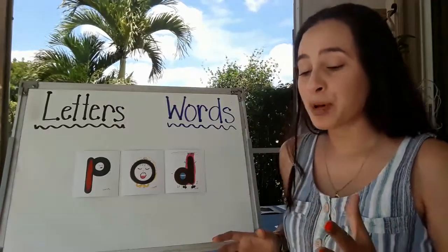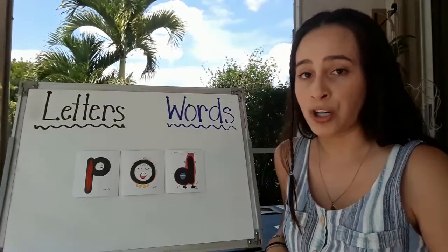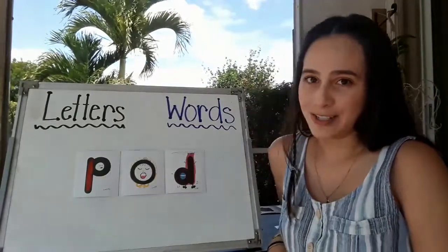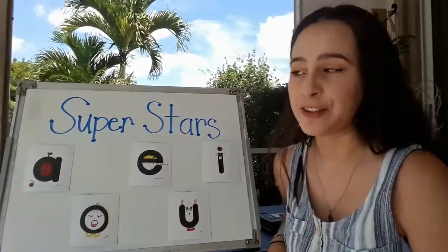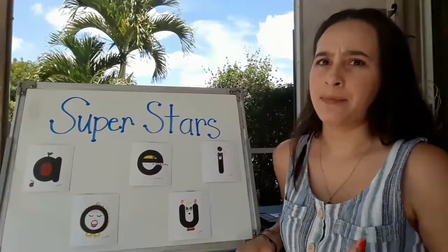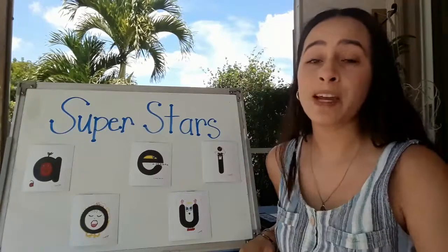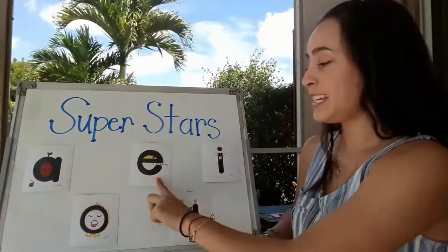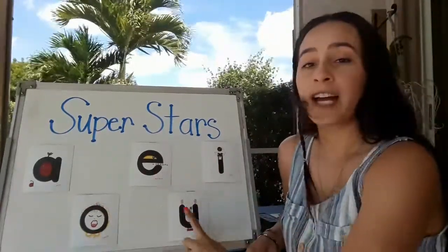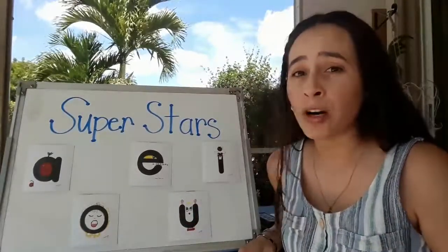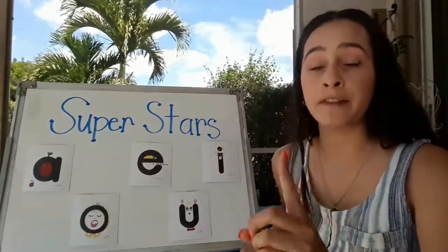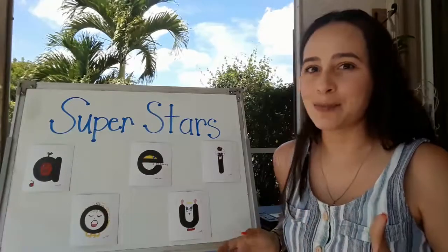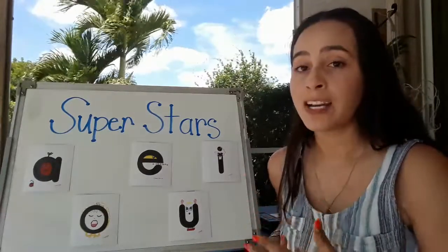Not just putting any letters together can you make a word. You need some superstars, and I'm going to introduce to you the superstars. These are the superstar letters. Some of you know these letters by a different name — I call them superstars, you may call them vowels. These superstars are A, E, I, O, and U. You can't make a word if you don't have at least one of these letters. These are the superstars. Let's get into making some words. Remember, you need a superstar in order to make a word.